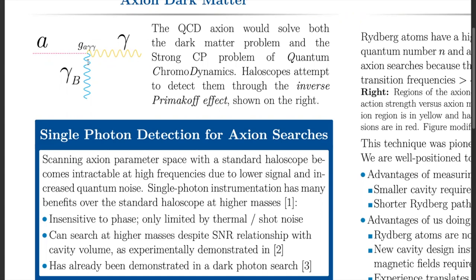The instrument that exploits this interaction is called a haloscope, and it does so by creating the optimal conditions for this interaction. Haloscopes contain strong magnets to create the magnetic field, cavities to resonantly enhance the produced photons, and low noise amplifiers to amplify the signal suppressed by this interaction strength.